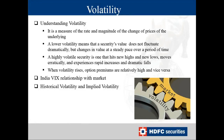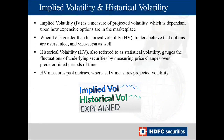There are two important volatility parameters: historical volatility (HV) and implied volatility (IV). Implied volatility, popularly known as IV, is a measure of projected volatility dependent upon how expensive options are in the marketplace. IV is always directly proportional to option prices — if IV is high, option prices are high; if IV is falling, option prices are also falling.